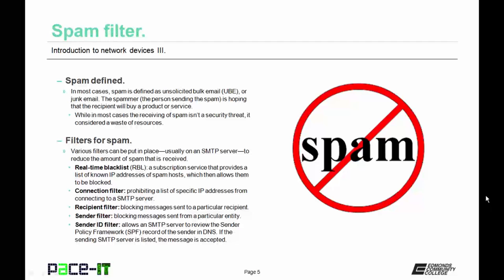There are various filters that are available for spam. These can be put in place, usually on an SMTP server, to reduce the amount of spam that is received by the end users. These filters include the real-time blacklist, or RBL. This is a subscription service that provides a list of known IP addresses of spam hosts, which then allows them to be blocked from reaching the SMTP server. Then there is the connection filter, which is prohibiting a list of specific IP addresses from connecting to an SMTP server.